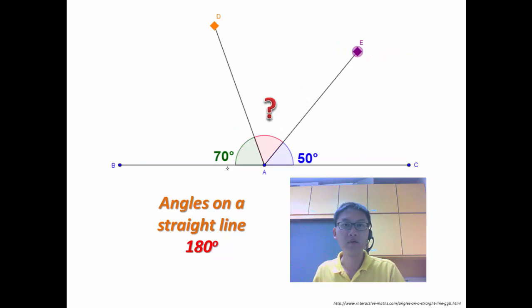Now, let's say I'm given another question. I have BAC with 70 degrees, EAC with 50 degrees, and I'm supposed to find the unknown DAE. So same thing,